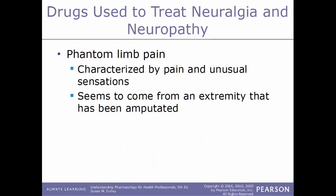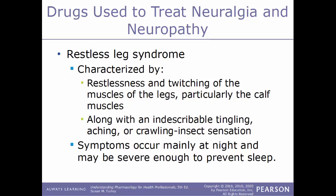Other examples of neuropathy conditions include phantom limb pain — pain and unusual sensations seeming to come from an amputated extremity, because the nerves that supplied that limb are still present — and restless leg syndrome, characterized by restlessness and twitching of leg muscles, particularly the calf muscles, along with tingling, aching, or a sensation of an insect crawling on the legs, occurring mainly at night and potentially severe enough to prevent sleep.